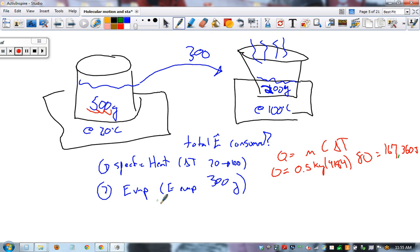Part two, evaporation: Q equals MHV. This is our evaporated mass. We lost 300 to evaporation, so it's 0.3 times heat of vaporization of water. That's 678,000.